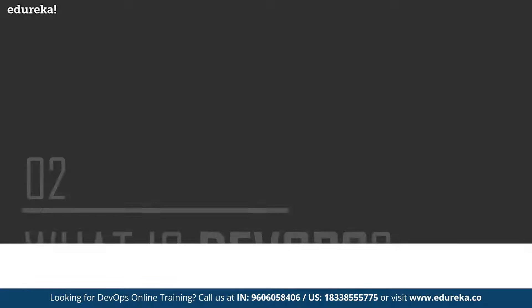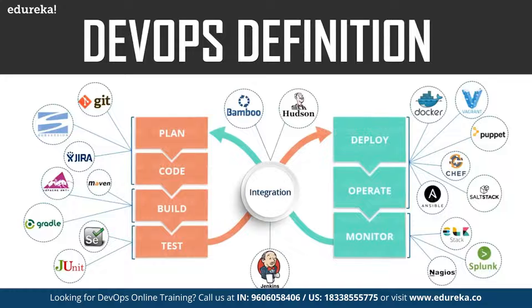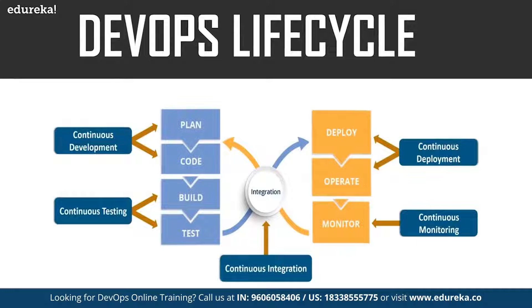So what is DevOps? The term DevOps is a combination of two words: development and operations. DevOps is a practice which allows a single team to manage the entire application development lifecycle — that is, development, testing, deployment, and operations. It is a software development approach through which superior quality software can be developed quickly and with more reliability. DevOps consists of stages such as continuous development, continuous testing, continuous integration, continuous deployment, and continuous monitoring. Its aim is to shorten the systems development lifecycle while delivering features, fixes, and updates frequently in close alignment with business objectives. As you can see in this diagram, these are the various tools used in DevOps.